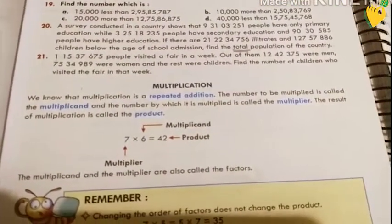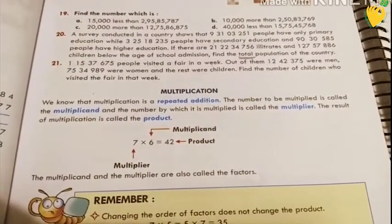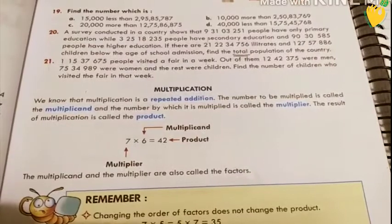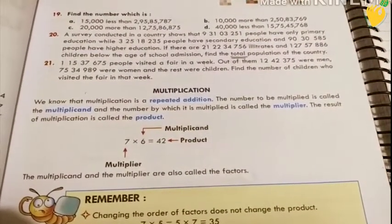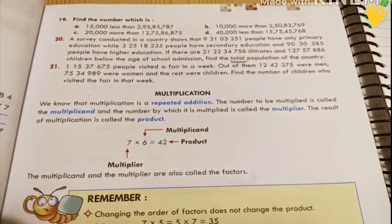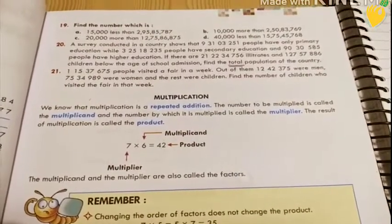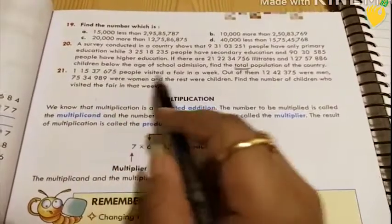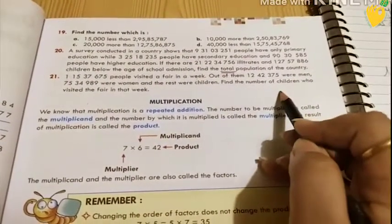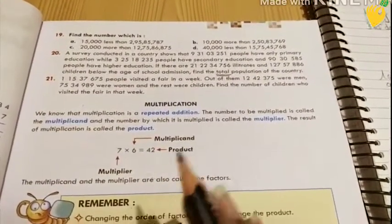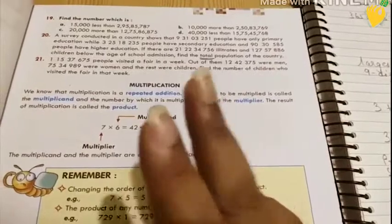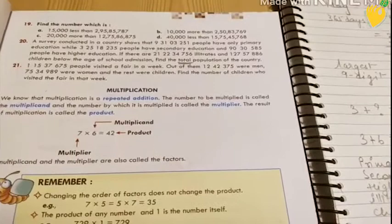Now moving to the last question, that is question number 21. 1 crore 15 lakh 37,675 people visited a fair in a week. Out of them, 12 lakh 42,375 were men, 75 lakh 34,898 were women, and the rest were children. So find the number of children who visited the fair in that week. This is also very easy. Here you have 2 operations this year, that is addition as well as subtraction.